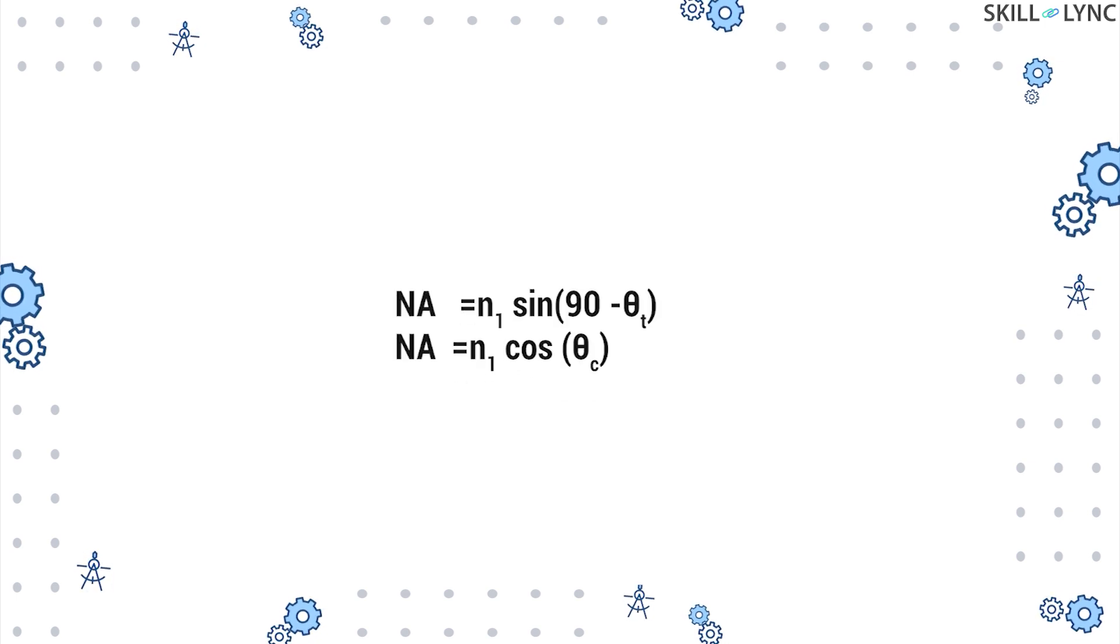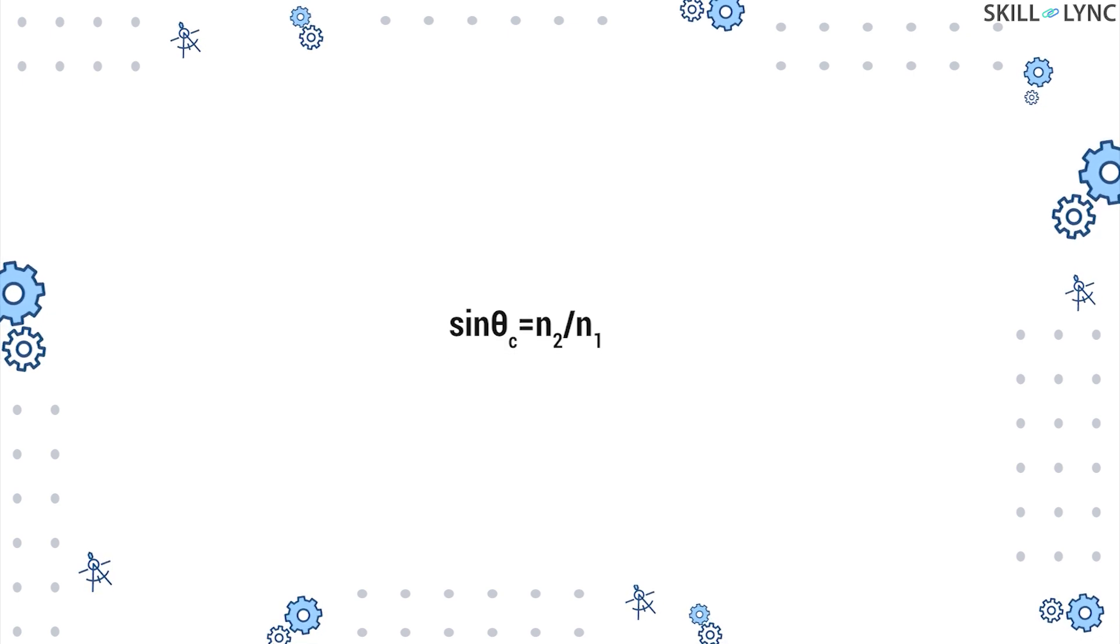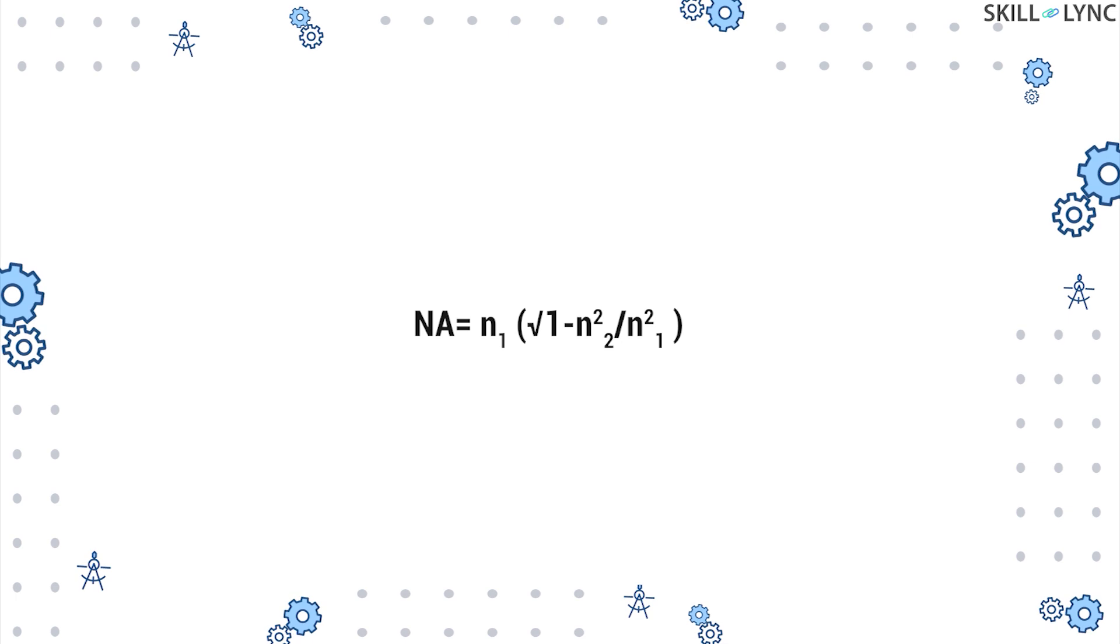Taking NA = n1 sin(90° - θc), we know that sin(90° - θc) is equal to cos θc, and cos θc can be given as √(1 - sin²θc). We just derived that sin θc = n2/n1, right? So on substituting, we get NA = n1√(1 - n2²/n1²).